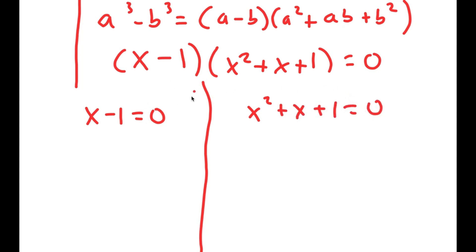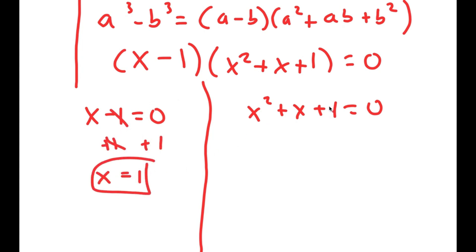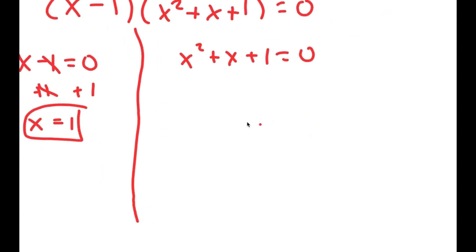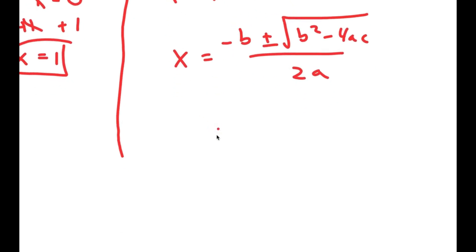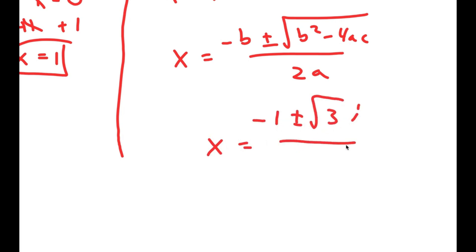So now I have x minus 1 equals 0 and x squared plus x plus 1 equals 0. For x minus 1 equals 0, all I have to do is add 1 on both sides and I get x is equal to 1. And for x squared plus x plus 1 equals 0, I can use the quadratic formula, giving me x is equal to negative 1 plus or minus the square root of 3 times i, all over 2.